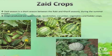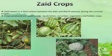Zaid season is a short season between Rabi and Kharif during the summer months. Crops produced are watermelon, muskmelon, cucumber, vegetables and fodder crops. Remember that all the juicy fruits and vegetables are grown in the Zaid crop season.